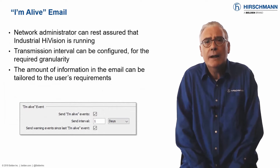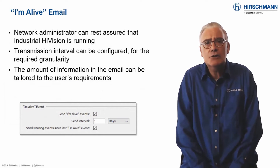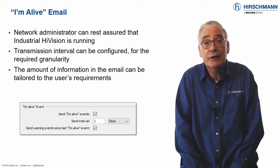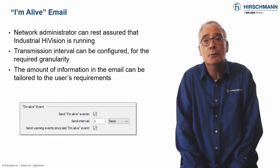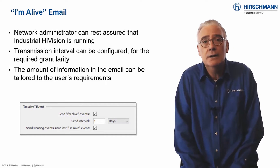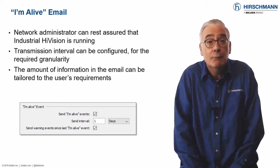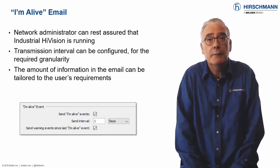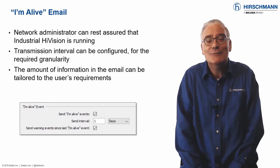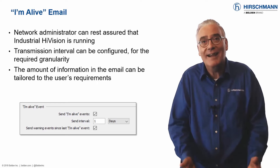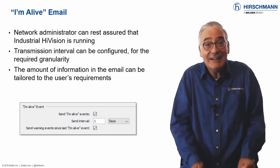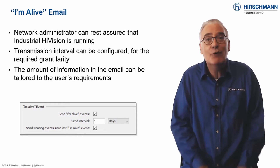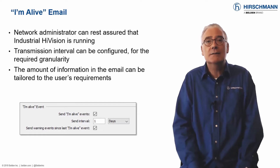There are many ways that Industrial HiVision can notify you or your colleagues about network problems — see the event handling video for more information. But all these techniques rely on one thing: Industrial HiVision must actually be running when the problem occurs.